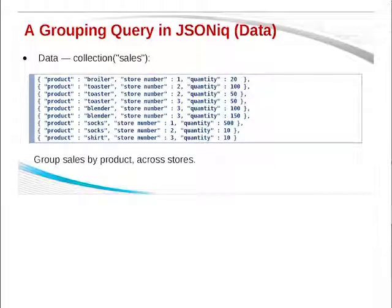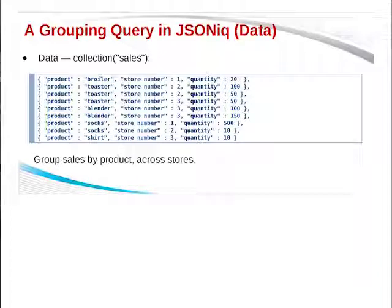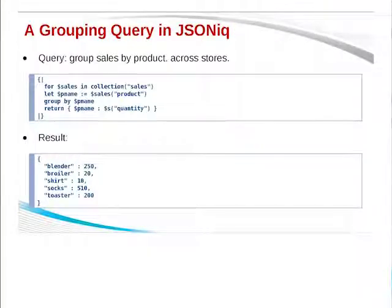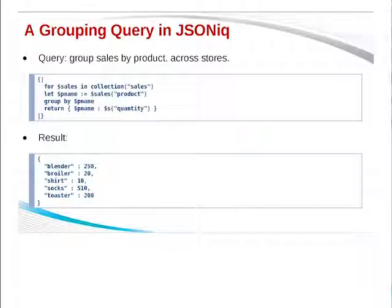The most important feature of JSONiq is compositionality. If you point to something in an existing literal JSON structure, you can replace it with an expression. In this query, I find Sarah and create a new person named Amanda who is one year older than Sarah, using one expression. Her friends are the same as Sarah's friends. You can create the keys in the same way using expressions — you can point to anything in any JSON object anywhere, create any JSON structure, and create any part of it using expressions. That's the most important feature.